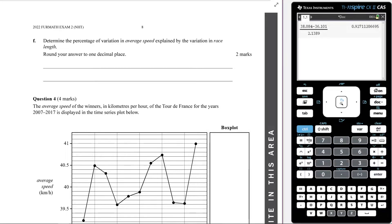We're now going to answer this question right here, and it's a good little question. It says, determine the percentage of variation in average speed explained by the variation in race length, round your answer to one decimal place.